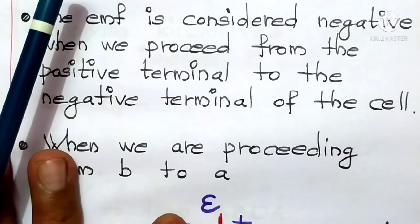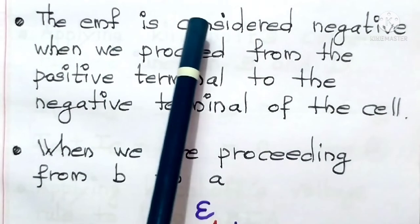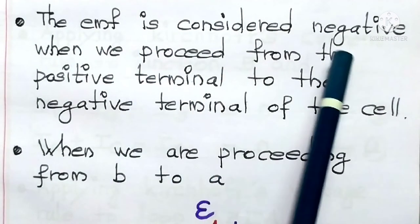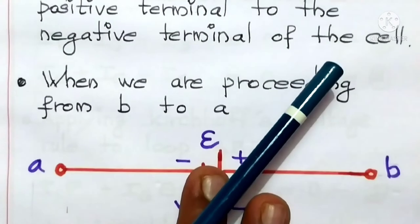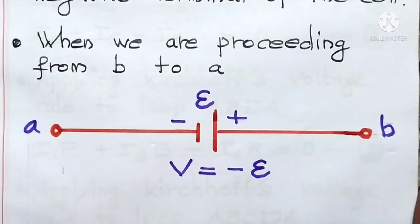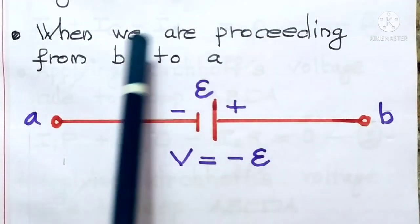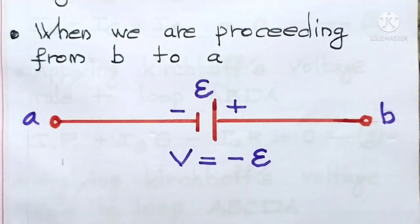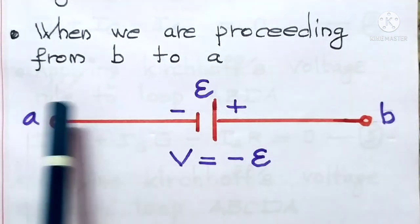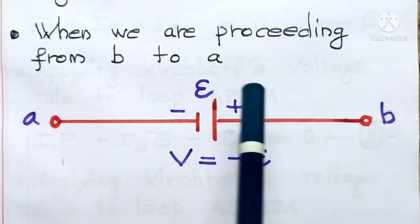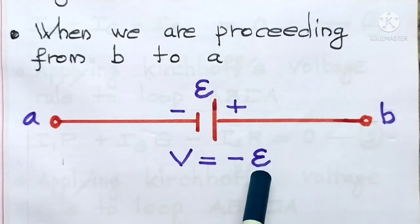The EMF is considered negative when we proceed from the positive terminal to the negative terminal of the cell. When we are proceeding from Terminal B to Terminal A — that means from the positive terminal to the negative terminal — this EMF takes the negative sign.